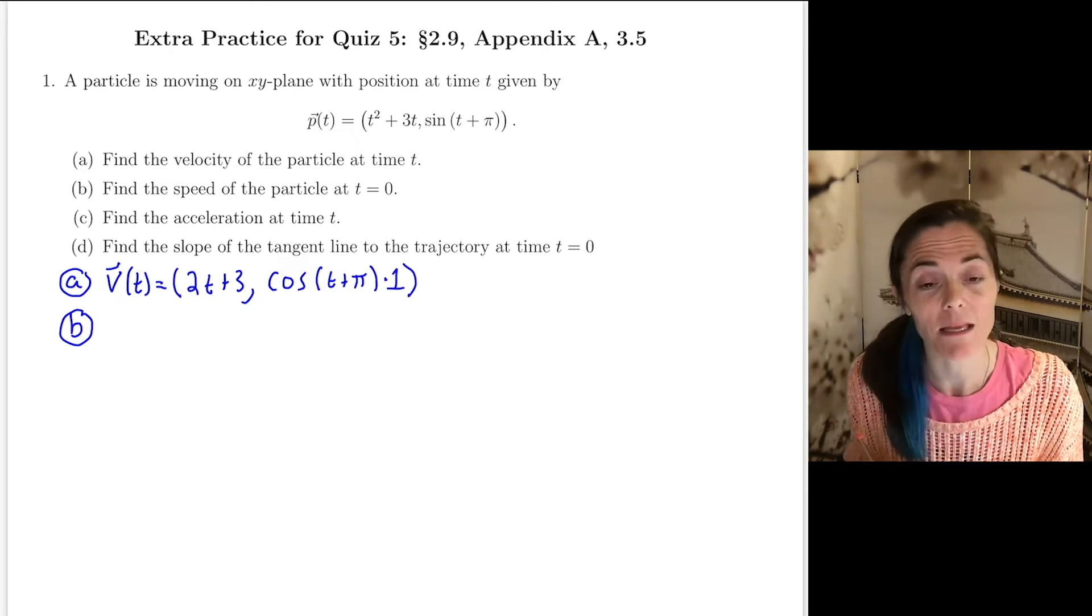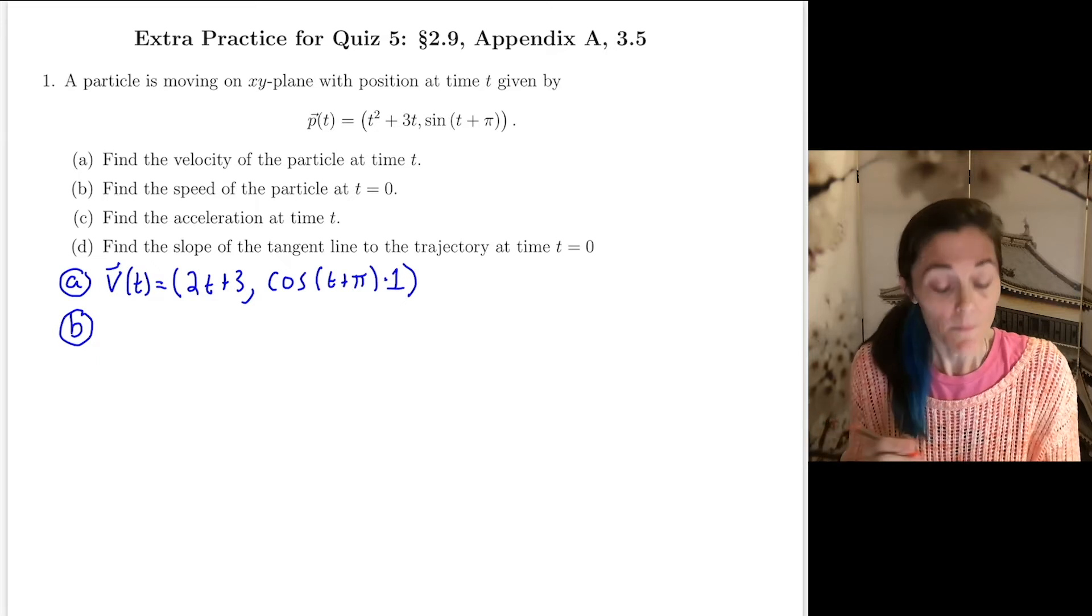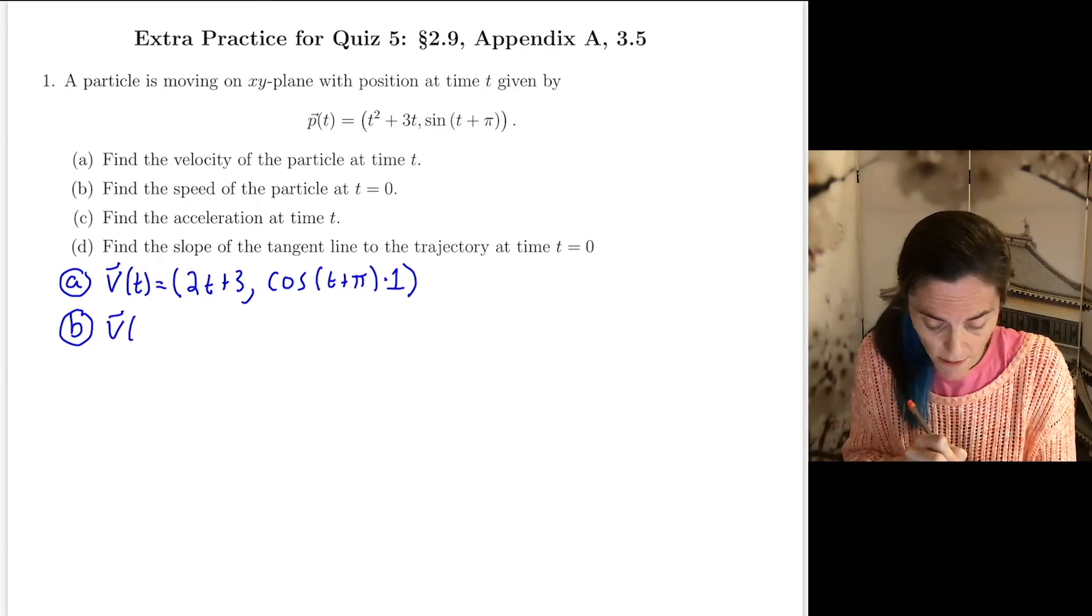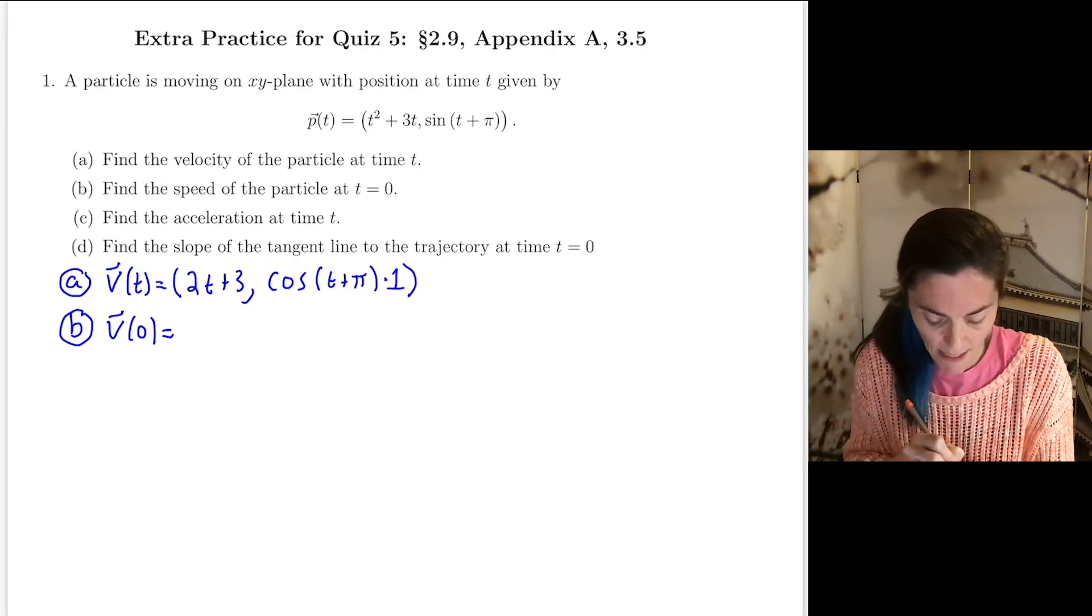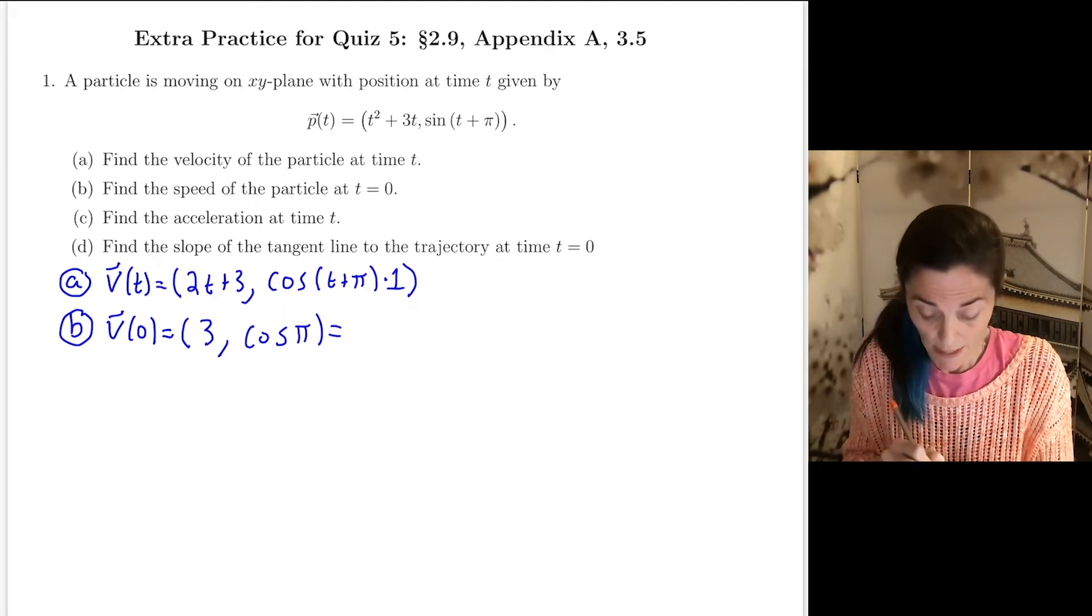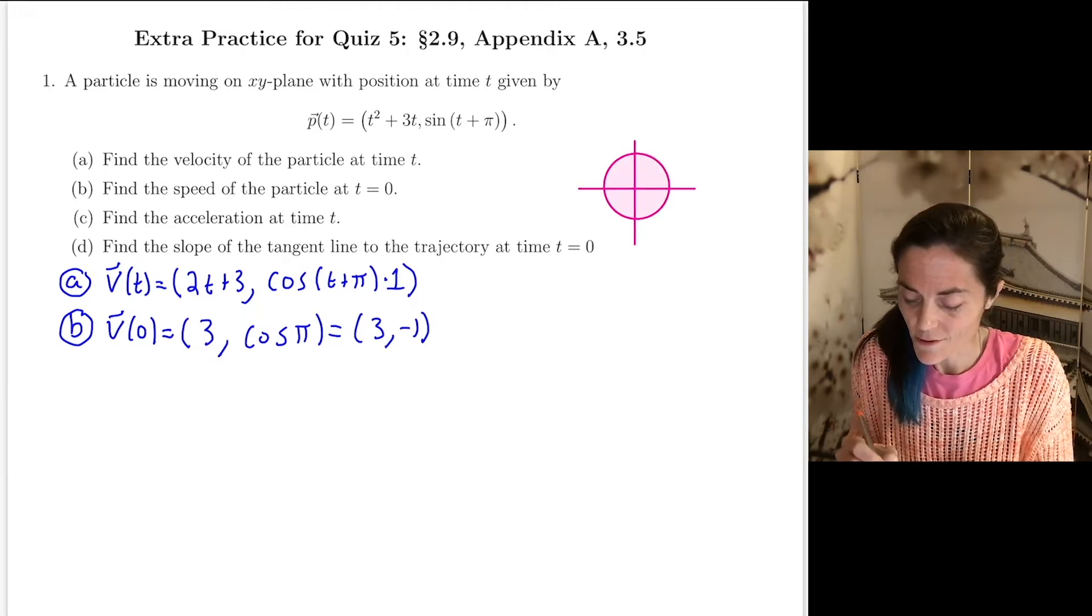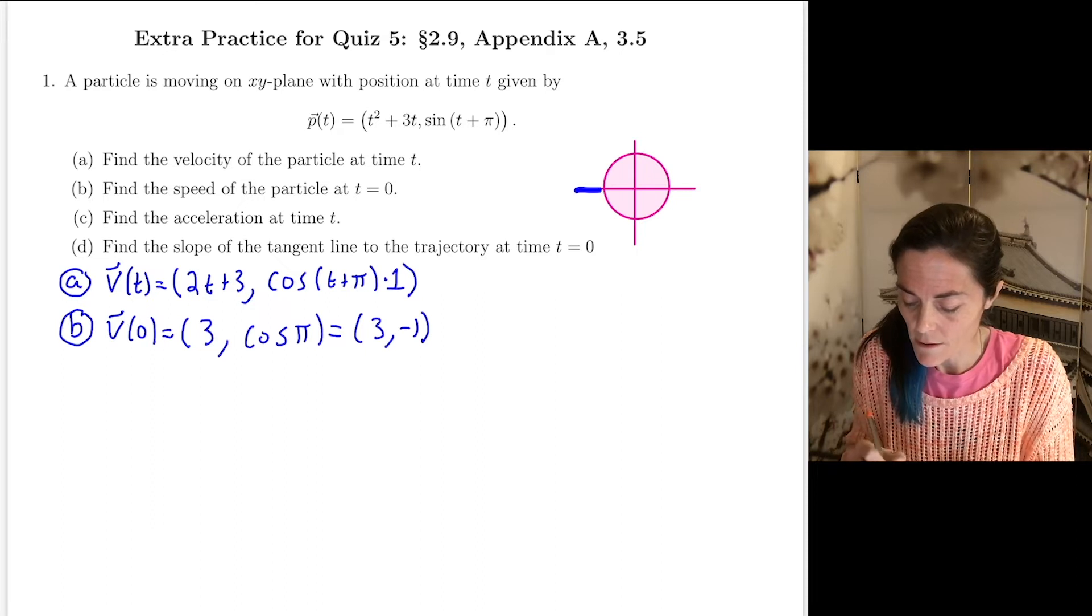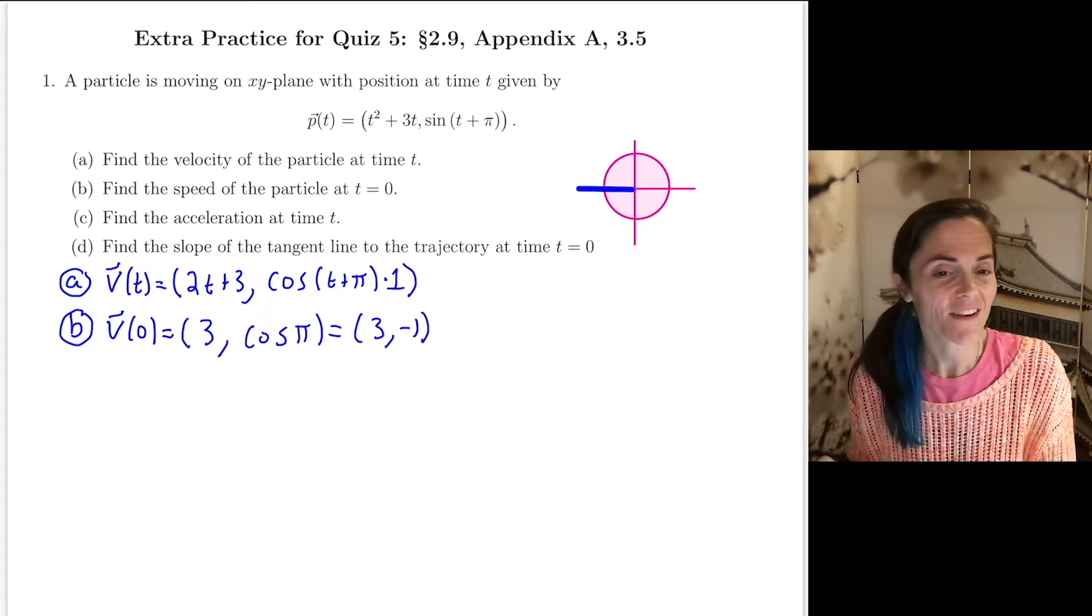So we have 2t plus 3, and then we differentiate the sine. We have cosine of t plus pi times 1. Really, it's a chain rule here, but my inside function has derivative 1. Now we move on to letter B. We want the speed. Speed is the length of the velocity vector.